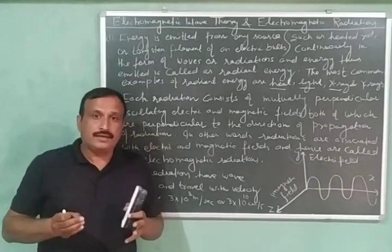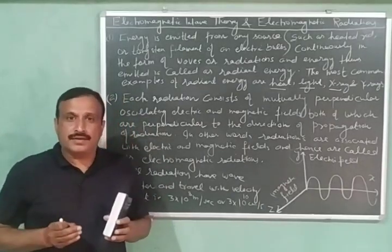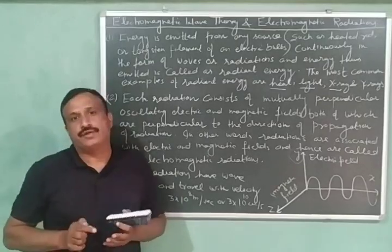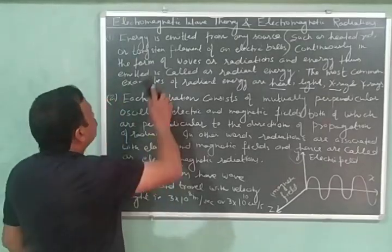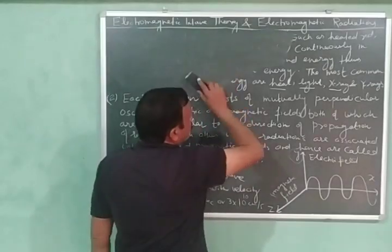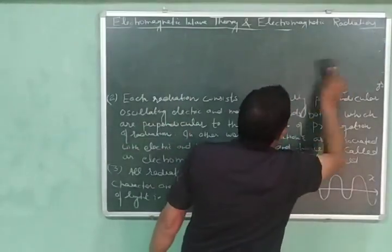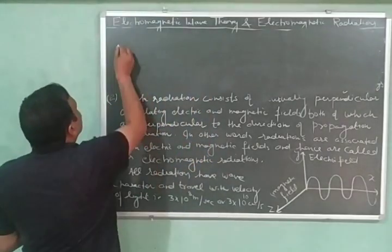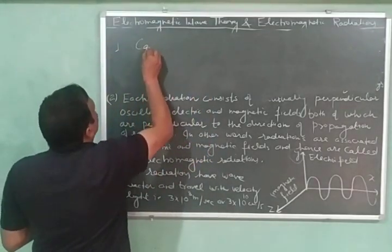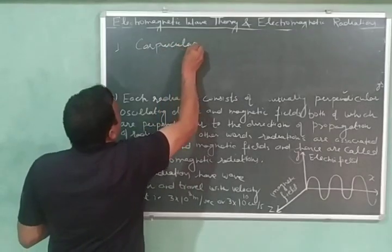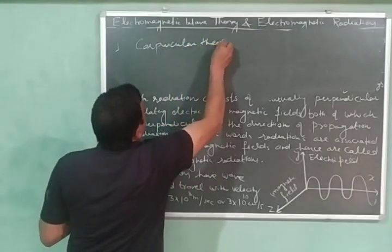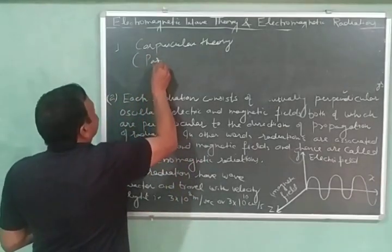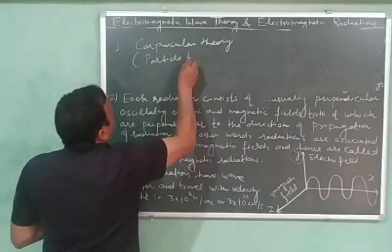So, here I want to add that these electromagnetic radiations can be described by two complementary theories. And the first theory is corpuscular theory. And it is also called as particle theory.